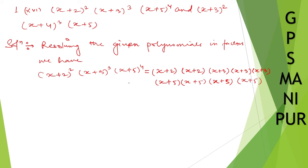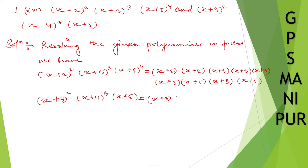The second polynomial, (x plus 3) whole square, (x plus 4) whole cube, and (x plus 5), can be written as (x plus 3)(x plus 3), then (x plus 4)(x plus 4)(x plus 4), and (x plus 5).